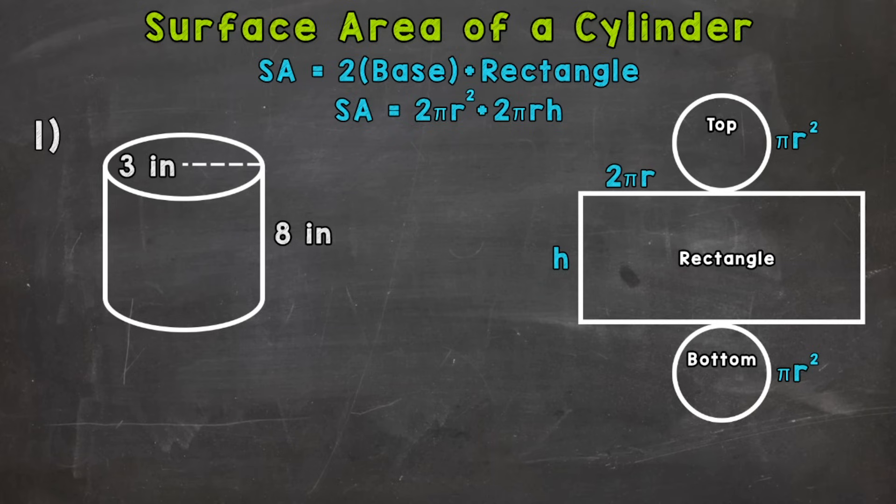Now on the right-hand side of your screen, I'll draw an arrow to it, we have the net of that cylinder. So we took the 3D figure and unfolded it. So we see all the different parts that make up that cylinder as a flat figure there. And this is going to help us visualize and see what parts we're going to find the area of and then add together in order to get the surface area.